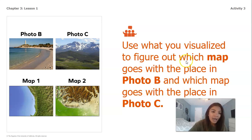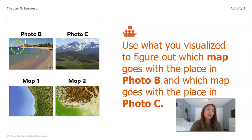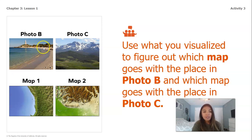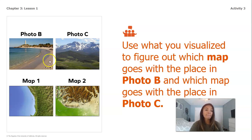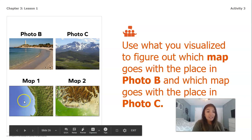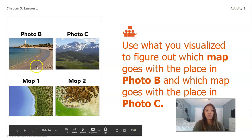If I'm looking at photo B, I see water and I notice it looks mostly like lowland around the water — I don't see any hills or mountains. When I look at my two remaining maps, I can see the water and the green showing lowland. So photo B and map one match up.